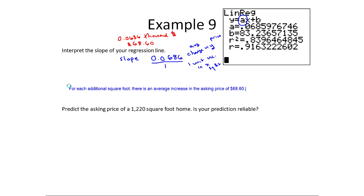Finally, the last part asks us to predict the asking price for a 1,220 square foot home. Remember our model, X in this case represents square footage, and our Y hat, our predicted value is asking price. So this is actually asking us, what do you get when X equals 1,220? This is simply plugging this into our equation. So Y hat would then equal 0.0686 times 1,220 plus 83.2366. So if I was to actually calculate this, I end up with 166.9286.